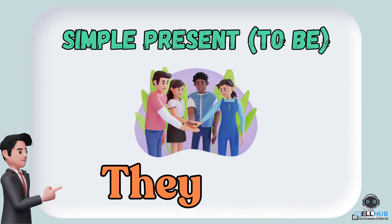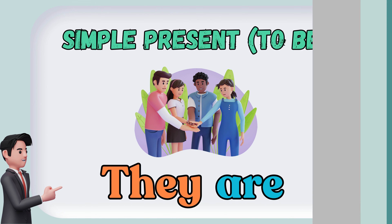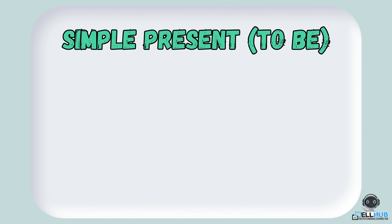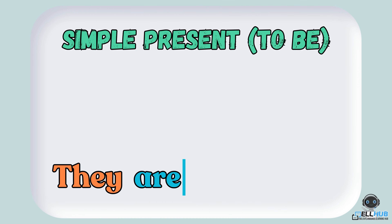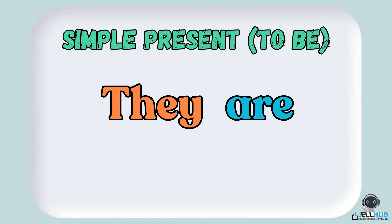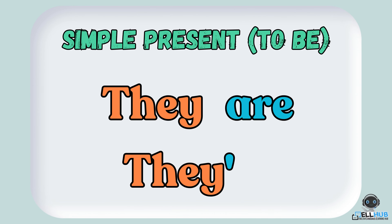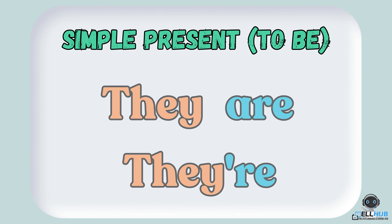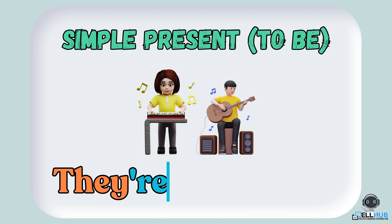They are — for example: they are musicians. In conversation, we often use the contraction they're, like they're musicians.